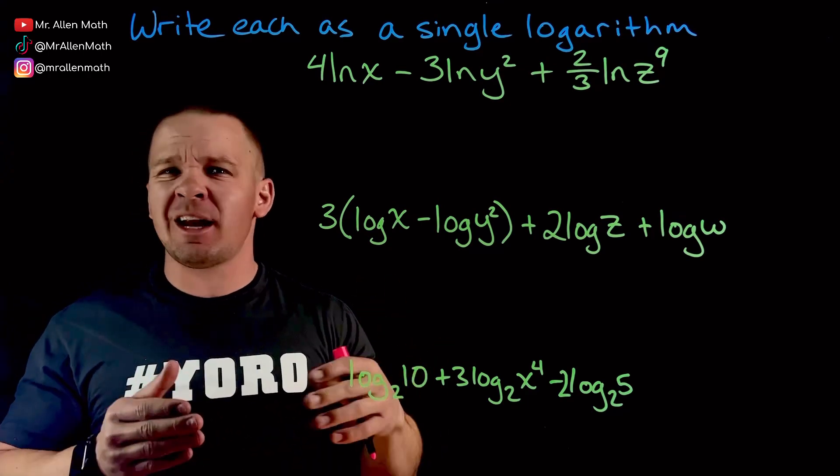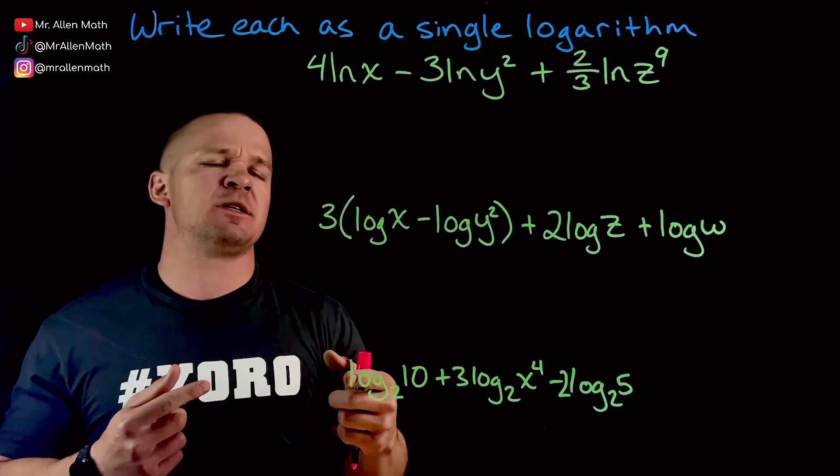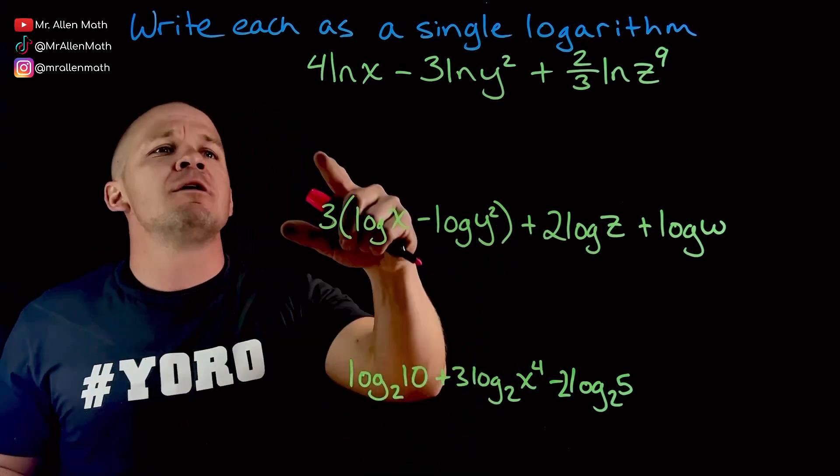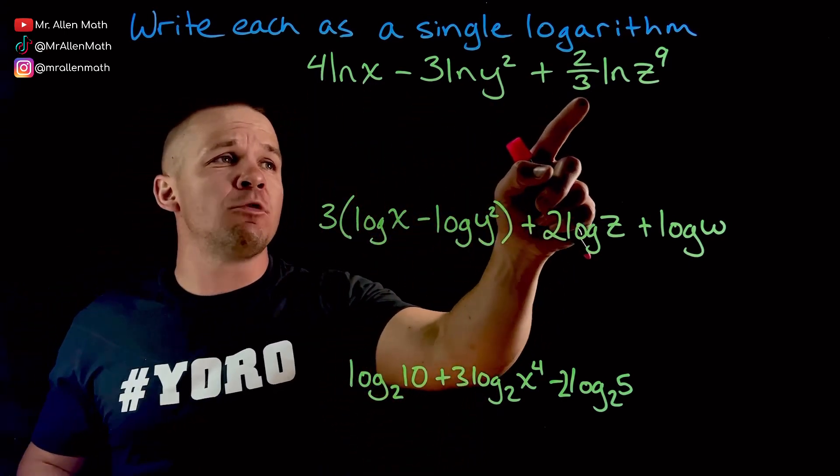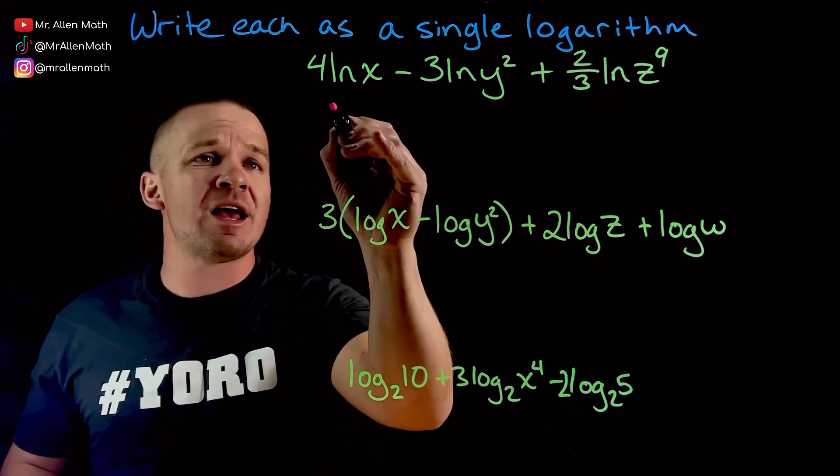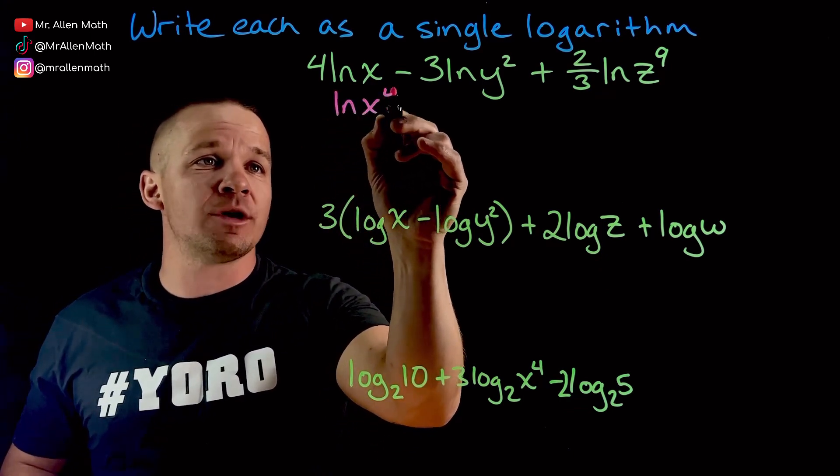Now, we can do these in a couple steps, and once you get pretty good at it, you can probably skip some of these steps that we're doing, but I'm going to do them all right now. All right, so first off, I got to take any of these coefficients. I'm going to move them up as exponents, so I'm going to have natural log of x raised to the fourth.